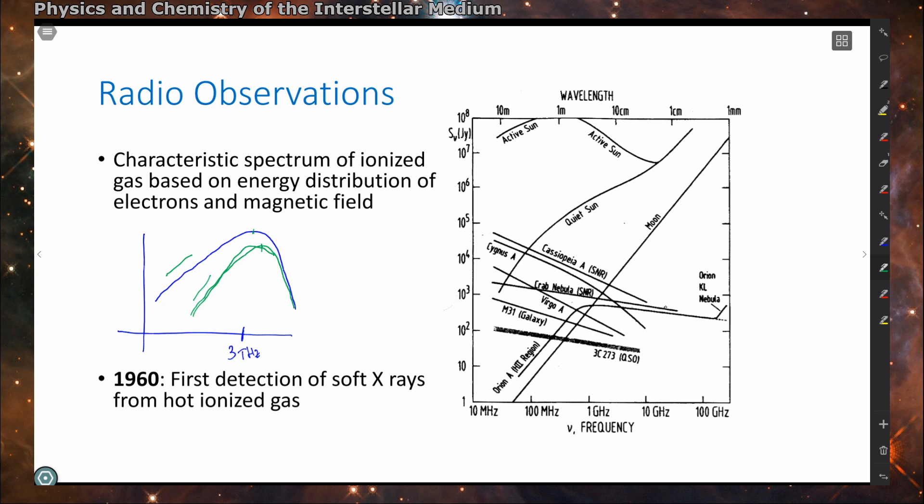This slope is what we observe here in the Orion KL region, and what we observe, for example, also here, the black body emission of the Moon. Everything that has this slope that is about 2, not exactly but about 2, is a black body or modified black body emission. That's also the overall slope of the Sun.